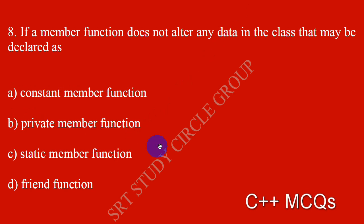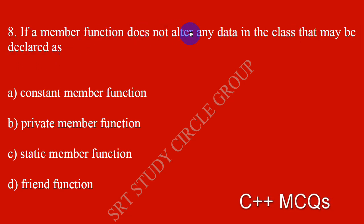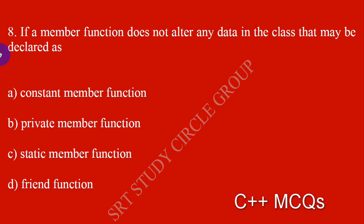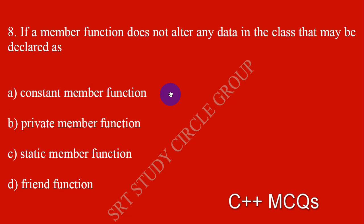If a member function does not alter any data in the class, that may be declared as a constant member function. If it does not alter the class data, it is declared as a constant member function.